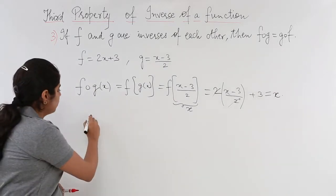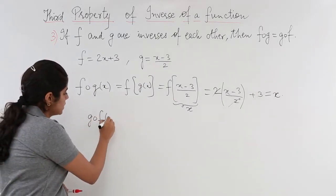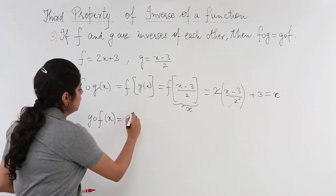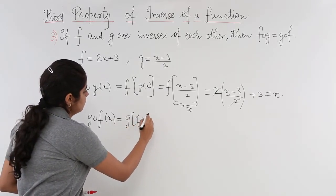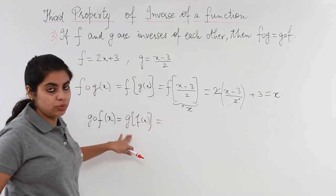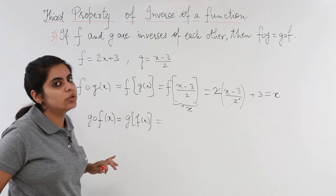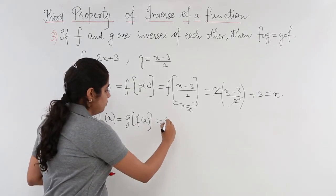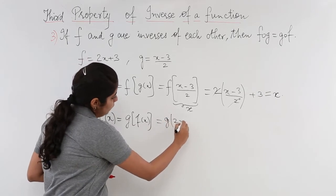Let me now find out what is gof of x. Gof is nothing but g of fx. g of fx means what? Outside it will be g only. Inside I have to write down fx. What is fx? 2x plus 3. So g of 2x plus 3.